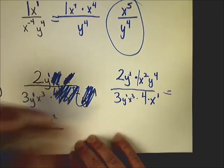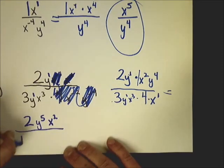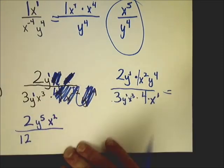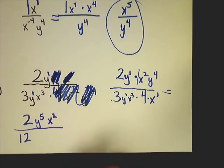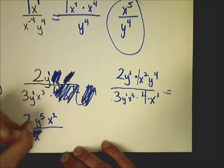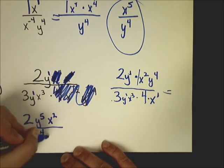On the bottom I've got three times four, which is twelve. I have an x to the third and an x to the first, which is three plus one is four. And I've just got that y to the first power.